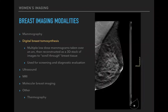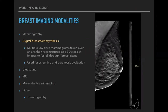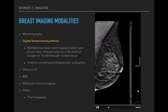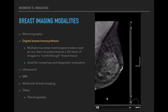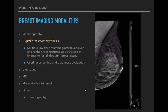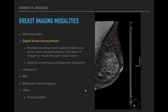Digital breast tomosynthesis is a newer technology involving multiple low-dose mammograms taken over an arc and reconstructed as a 3D stack of images to scroll through the breast tissue. It's used for both screening and diagnostic evaluation, was recently approved by the FDA to be used alone without a separate 2D image, and has been shown to reduce the number of false positive callbacks from overlapping breast tissue that un-overlaps as you scroll through.